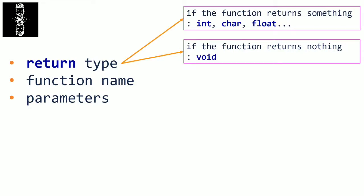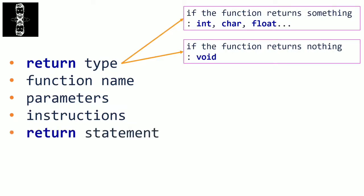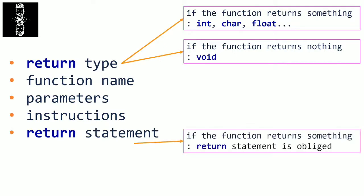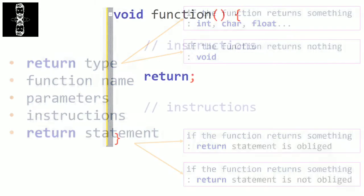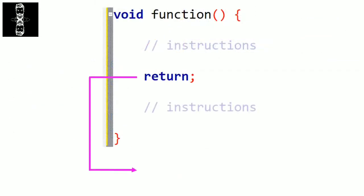Then we have the instructions that the function will execute to do its task. And then we have the return statement. If the function returns something, we must have a return statement. But if the function returns nothing, the return statement is not required. When the return statement is executed, the function directly ends even if there are instructions after it.